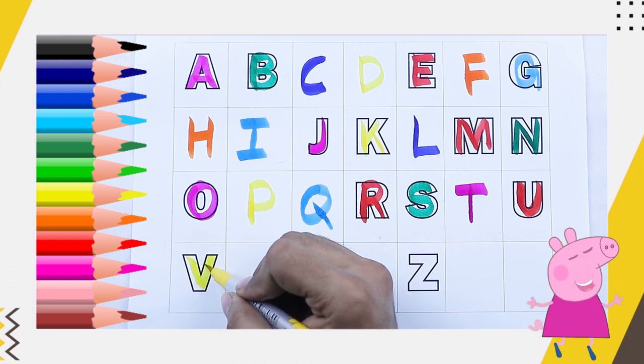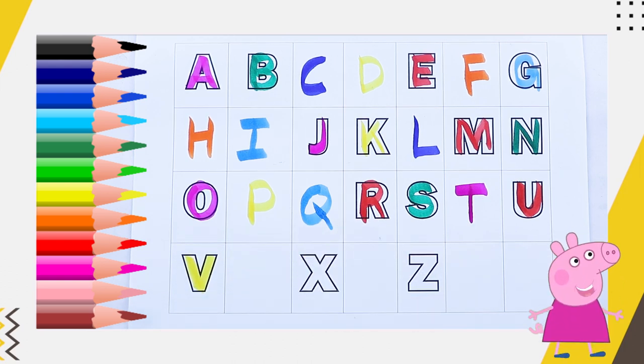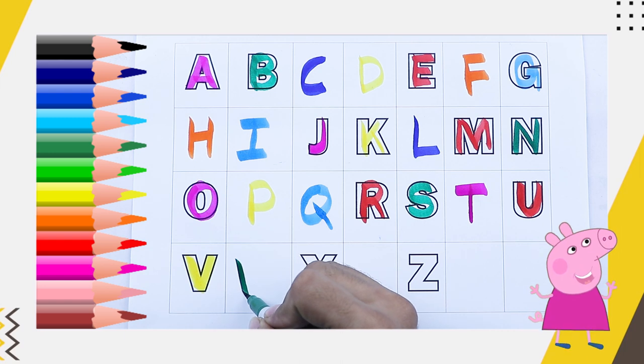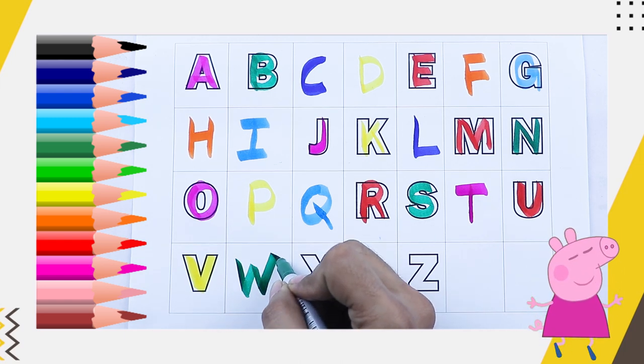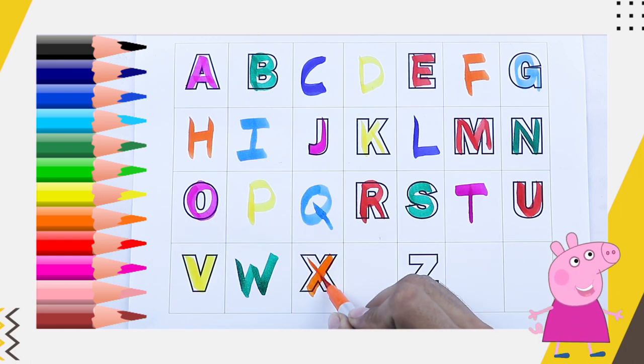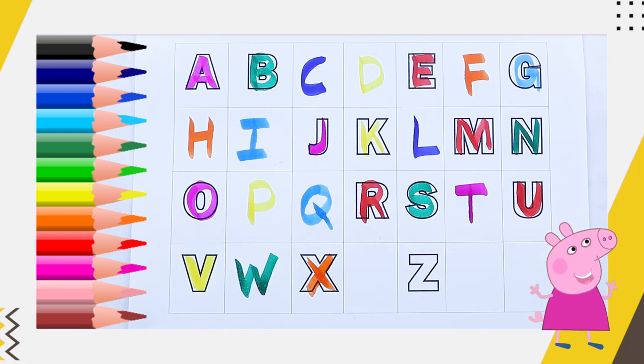V, yellow color, V. What is the next? What is the next? W, green color, W, W for watch. What next? X, orange color X, X for X must be.